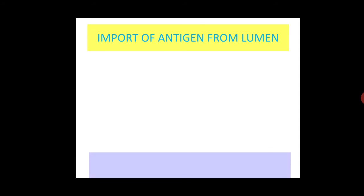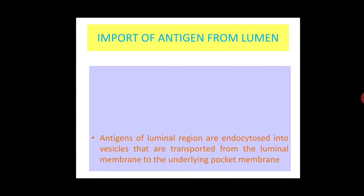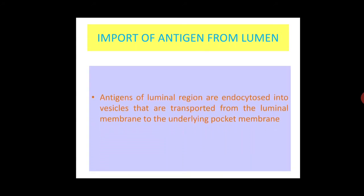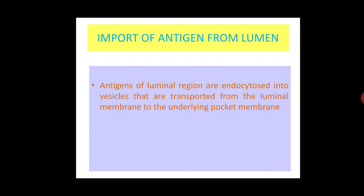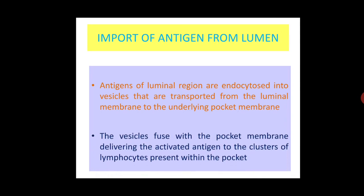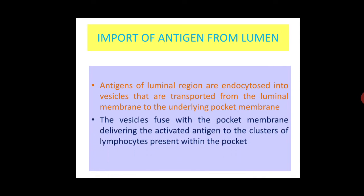Import of antigen from the lumen occurs by the process of endocytosis into vesicles that are transported from the luminal membrane to the underlying pocket membrane. These vesicles fuse with the pocket membrane of M cells, delivering the activated antigen to the clusters of lymphocytes present within the pocket.